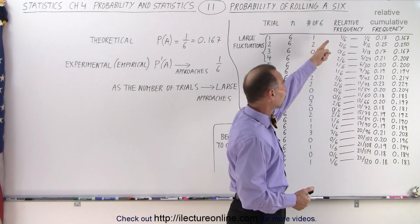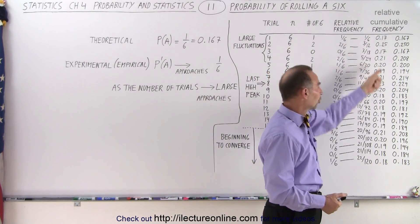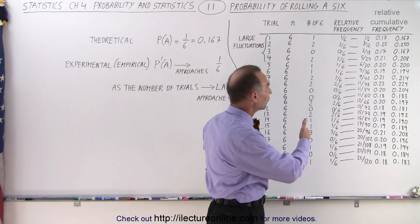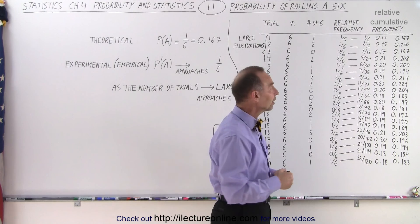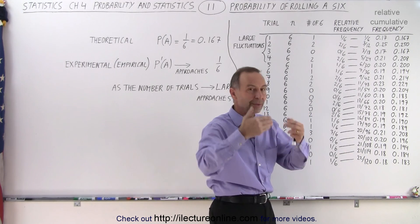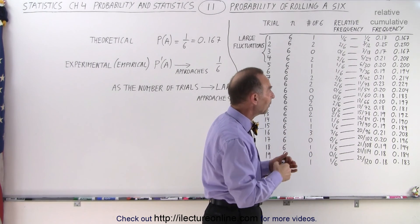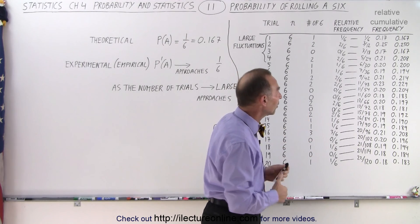Now we're going to keep track of what we call the relative frequency and the cumulative frequency. The relative frequency is the frequency of throwing a six in any given trial. The cumulative frequency is when we keep adding up the results and we keep adding up the total number of tosses.